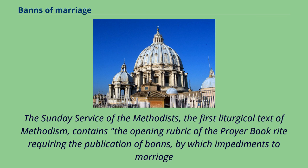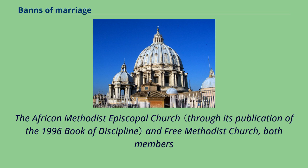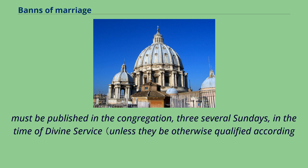The Sunday Service of the Methodists, the first liturgical text of Methodism, contains the opening rubric of the prayer book rite requiring the publication of banns, by which impediments to marriage such as consanguinity and legal betrothal to another could be revealed and investigated. These banns are to be read over a period of three Sundays during the time of divine service. The African Methodist Episcopal Church and Free Methodist Church, both members of the World Methodist Council, contain a rubric for the reading of the banns: 'The banns of all that are to be married together must be published in the congregation three several Sundays, in the time of divine service, unless they be otherwise qualified according to law.'